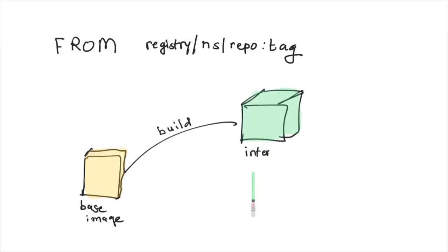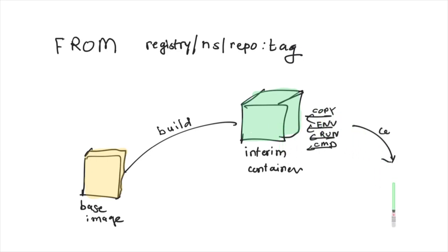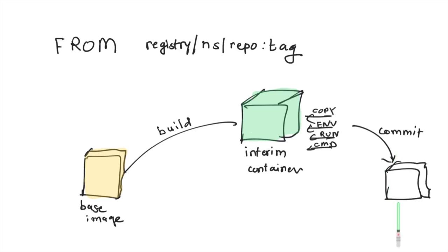Using the base image, intermediate containers are created. Inside those intermediate containers, during build time, you execute all the instructions including COPY, environment, CMD, and so on. You then commit your container to create your own image and tag it with whatever option you provide with the docker build command. So FROM is the first instruction in the Dockerfile.